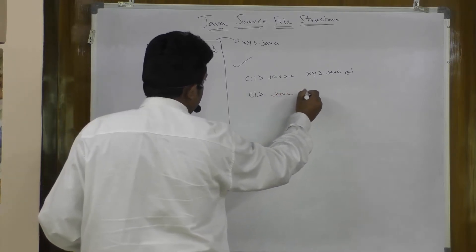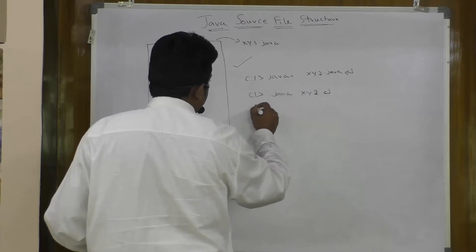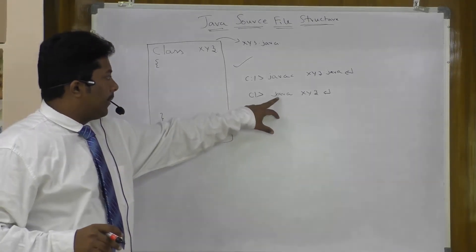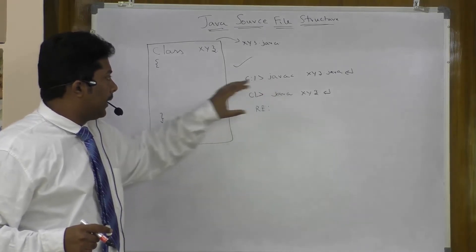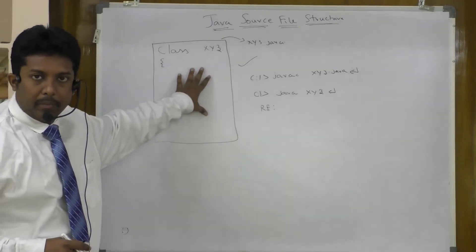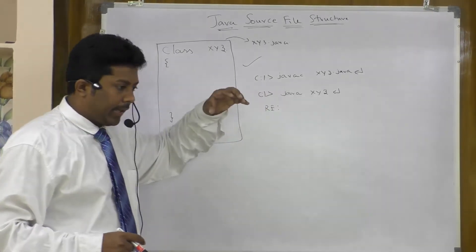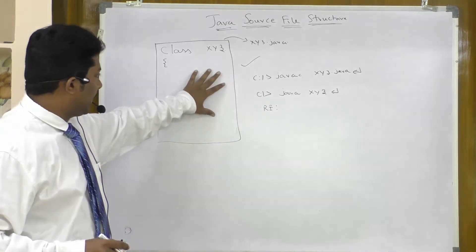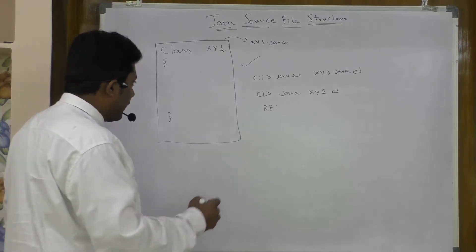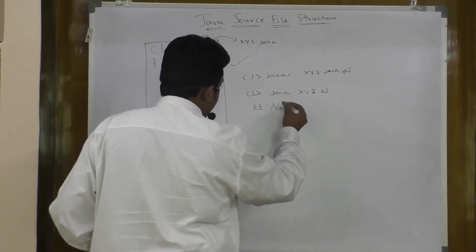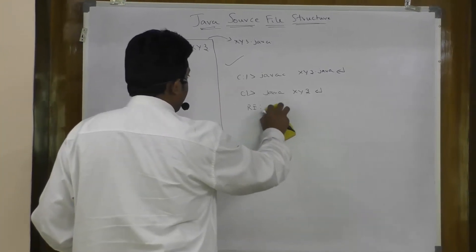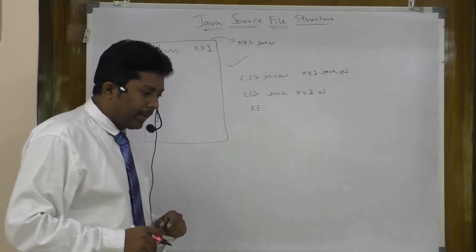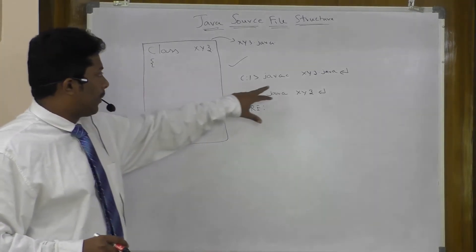The real problem comes when you try to run it with 'java XYZ'. Then a runtime exception is fired, because the entry point for JVM execution is the main method. Since we don't have 'public static void main' here, the JVM will report a runtime exception: 'NoSuchMethodError: main'.